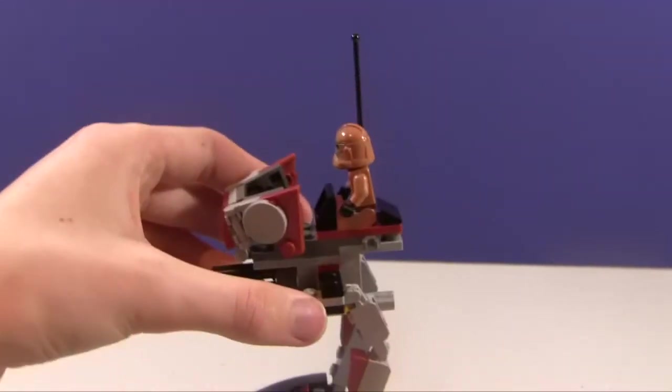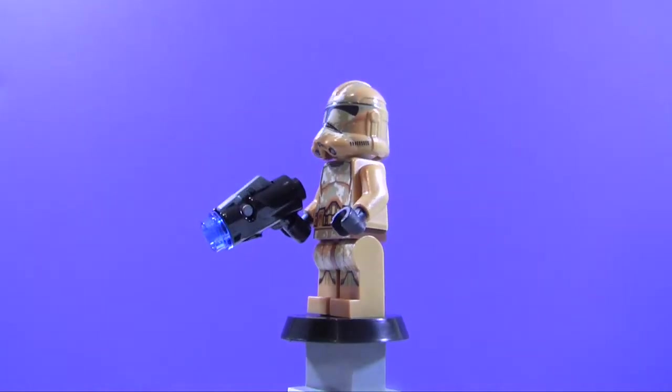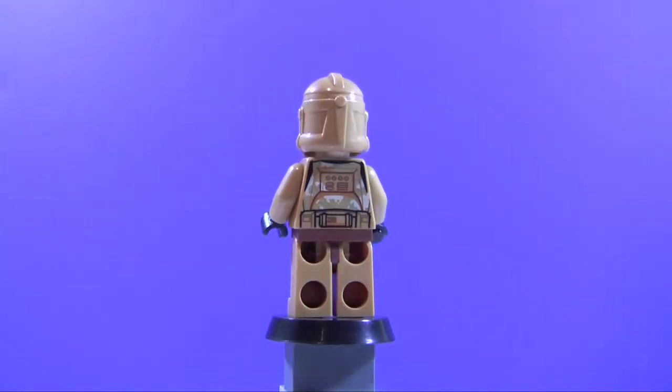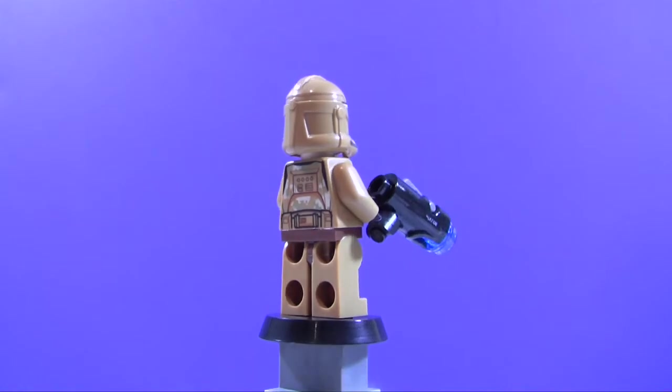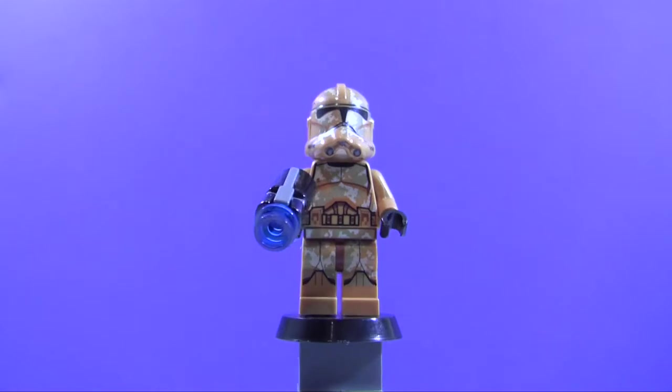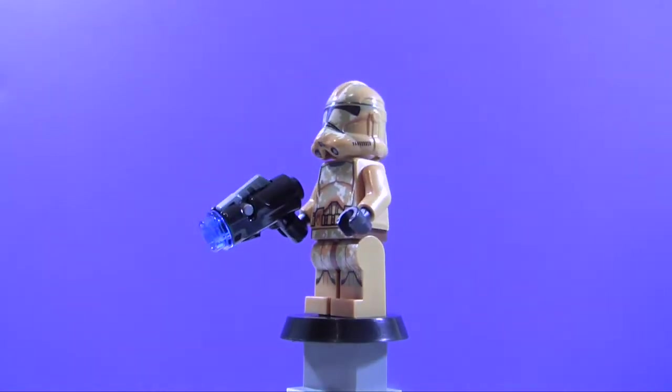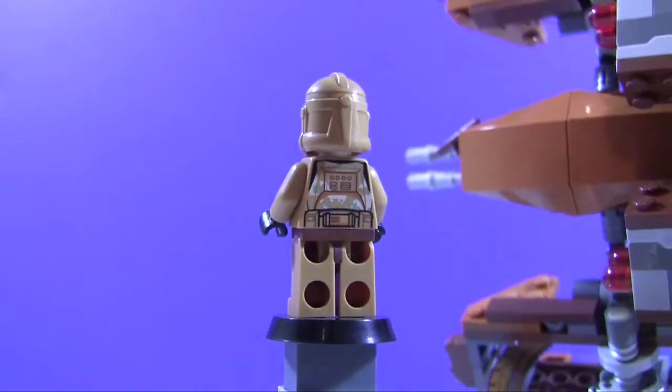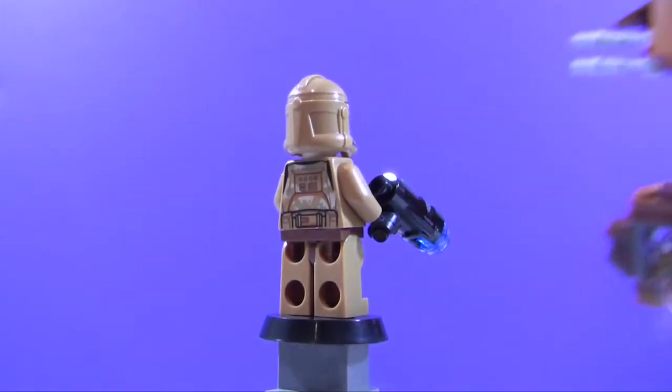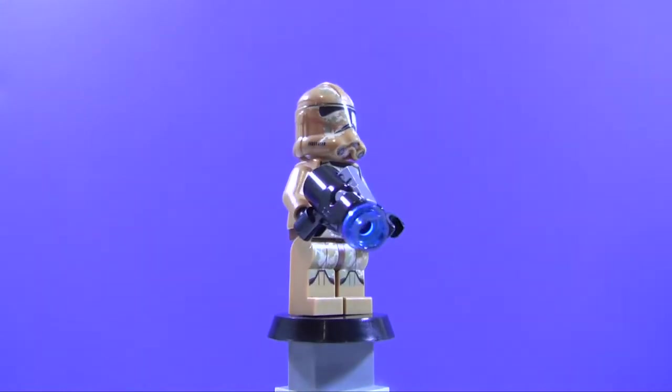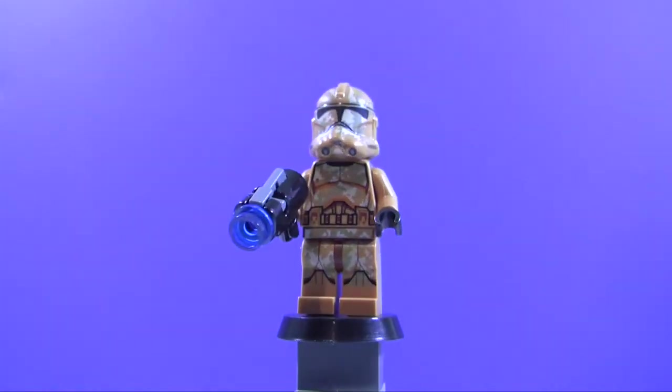Let's get into the minifigures themselves. As you can see here, we get the standard Geonosis clone trooper. This is a pretty awesome minifigure featuring the new dark orange color. It's actually, I feel, a mix. It might be just medium flesh, because dark orange I know for sure is, for example, this color right here on the Hailfire Droid. So I do believe this is a medium flesh color, which is actually pretty interesting that the LEGO Group decided to make full minifigure parts in this color.